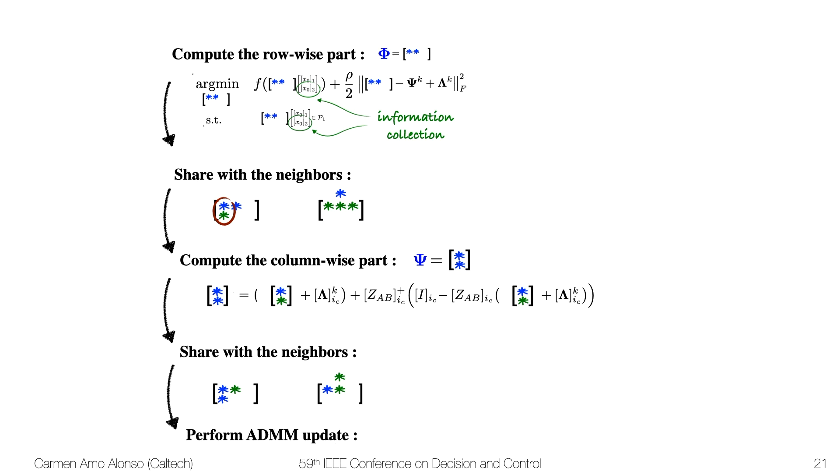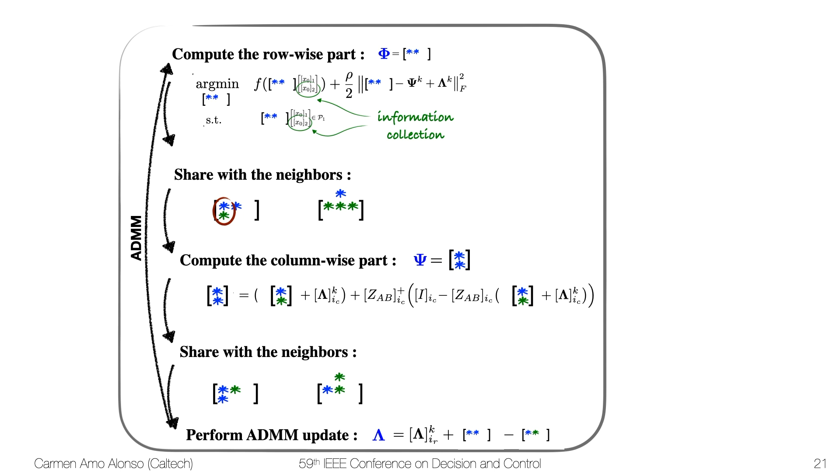Lastly, we perform the ADMM update, and we keep iterating until convergence. This is the distributed and localized synthesis that we proposed. Notice that I just illustrated it with a row and a column per subsystem, but there is usually a set of rows that a subsystem needs to solve for, and the size of this set depends on the time horizon and the dimension of the subsystem.